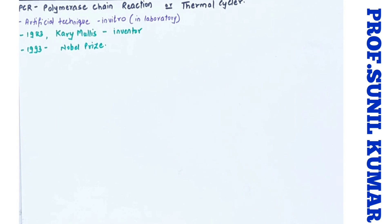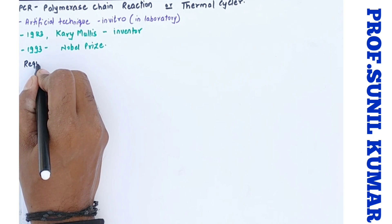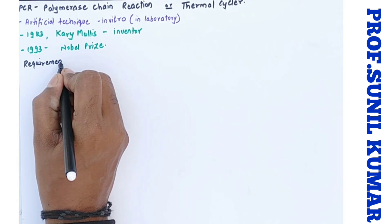The Kary Mullis PCR machine is also used in DNA fingerprinting technique and also it is used for gene amplification technique.